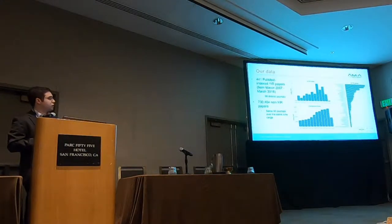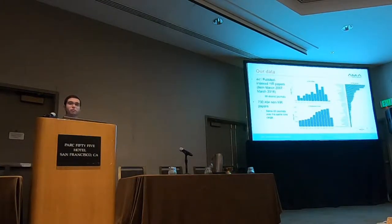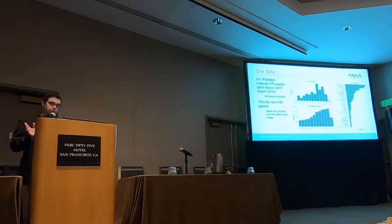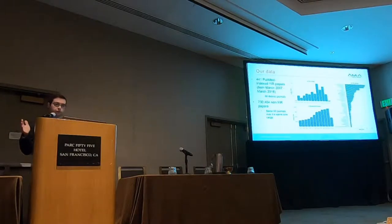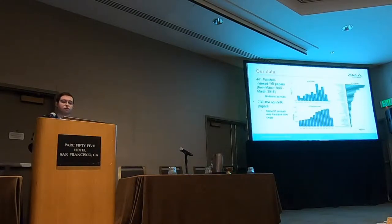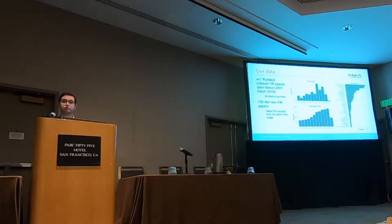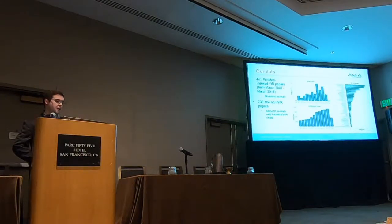Here's what our data looks like. Our data included 441 PubMed-indexed Year-in-Review papers, which is almost all of the papers that were in there — several bioRxiv papers couldn't be included due to lack of article metrics. These come from 90 distinct journals and were published between March 2007 through March 2018, spanning the range of those Year-in-Review session coverage. We compared these to 730,000 non-Year-in-Review papers from the same 90 journals over the same time range, and you can see some simple summary statistics on the screen.